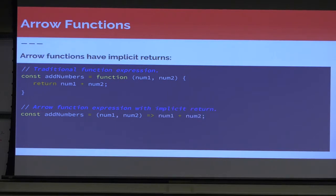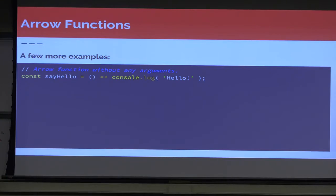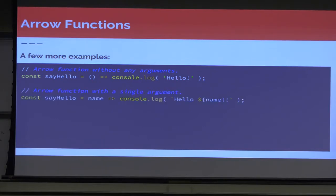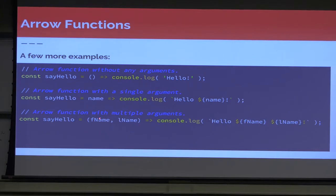But arrow functions give us more than that — they also have implicit return. An explicit return is where we specifically say we're returning this value plus this value. With implicit return, we remove the return keyword and two lines off this function: num1 + num2. It already knows that as we finish the arrow function like this, it is an implicit return. You can also have no arguments — just an open/close parenthesis, then the arrow and implicit return. If you have a single argument, you don't need to wrap it in parentheses. If you have multiple arguments, you throw them into parentheses.